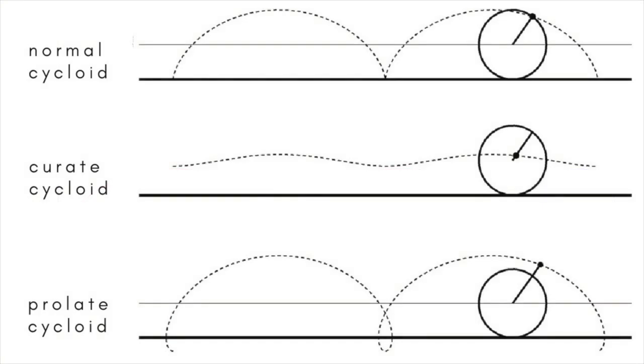As well as the ordinary cycloid, there is the curtate cycloid, which is the path traced out by a point on the inside of a rolling circle, and the prolate cycloid which is followed by a point on the outside of the circle.